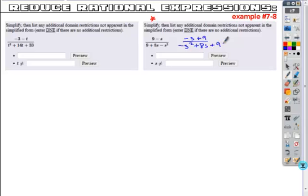The first thing I would do is I would factor out negatives here. So I get negative quantity s minus 9 and then in the denominator a negative s squared minus 8s minus 9. Notice my negative signs will cancel.